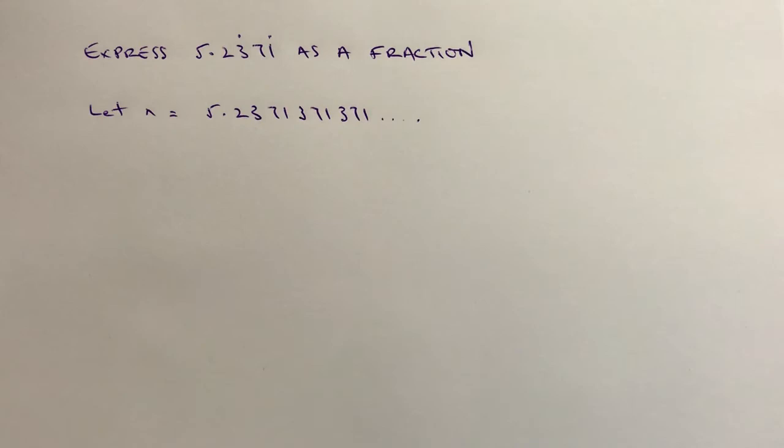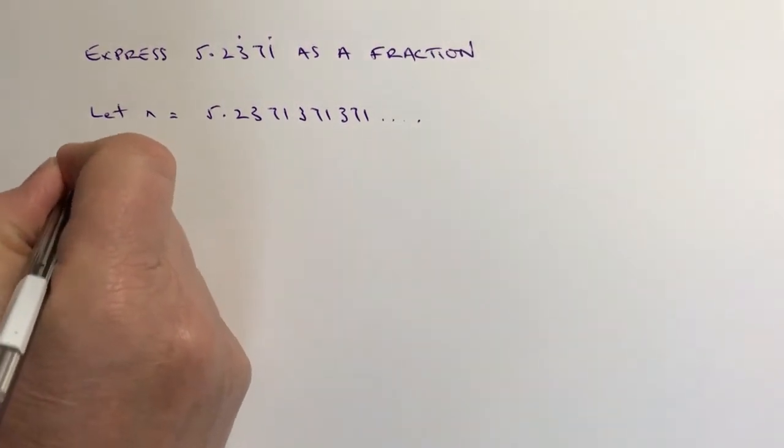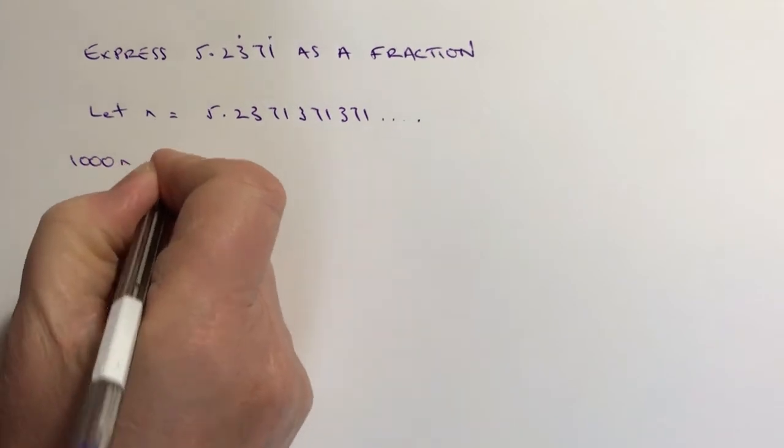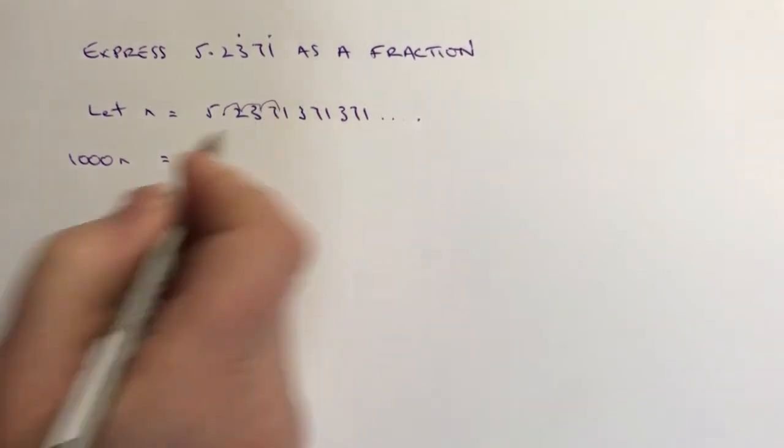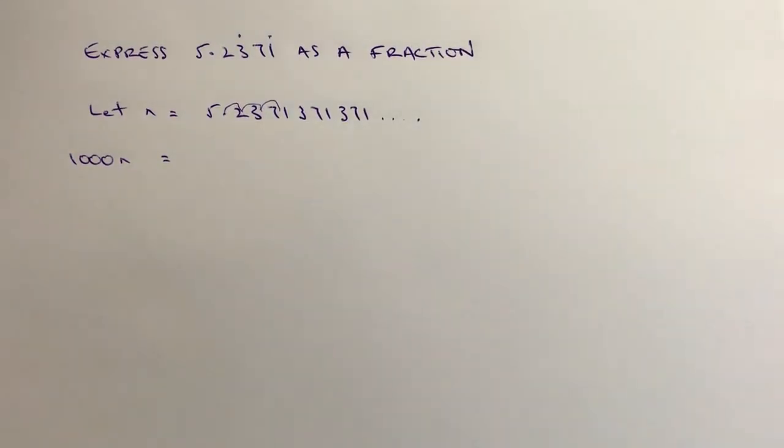Now, if we multiply that through by a thousand, what I end up with is 1000n equals. And I'm going to move the decimal point three places. So the numbers themselves are a little bit hard on this particular type of question.